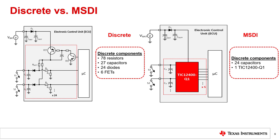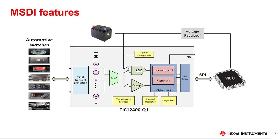MSDI decreases component count, saves board space, which decreases the bill of materials and manufacturing costs. In the TIC12400 and TIC12400Q1, the integrated ADC allows for detection of resistor-coded switches, which are seen in wipers and light dimmers. The integrated ADC reduces the system complexity and allows for a cheaper MCU.